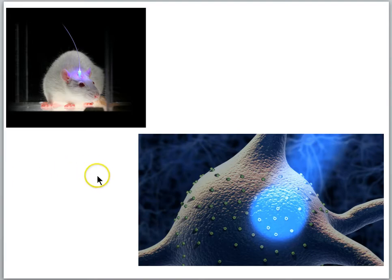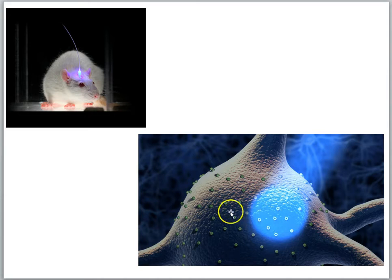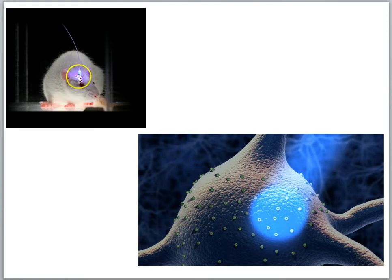The optogenetics technique is one where, as the cells insert these light-activated proteins into the membrane, you shine light on them, they open up — there are little channels, ions go in — and you can activate or inhibit the cell, depending on which proteins get inserted into the membrane. Here's the rat with the little light-optic fiber.